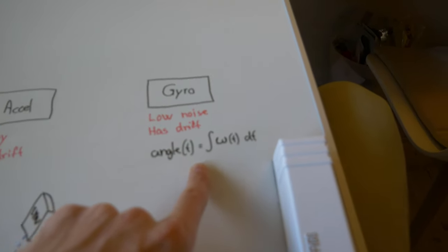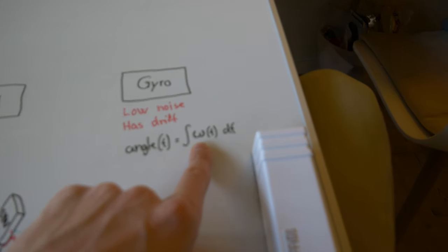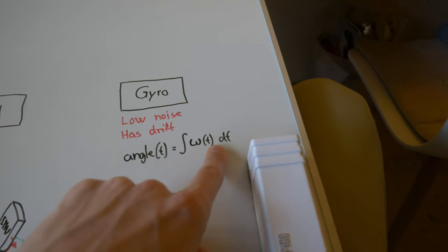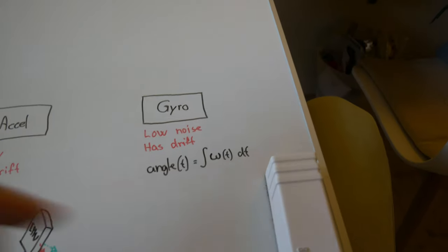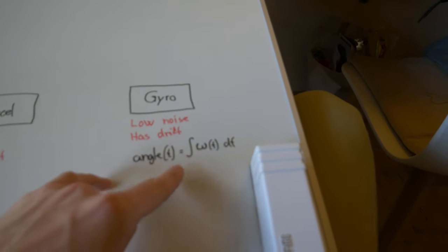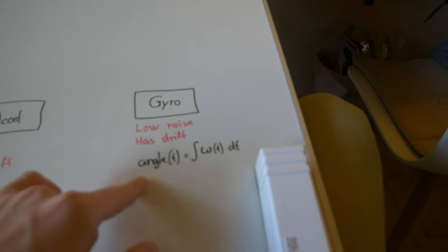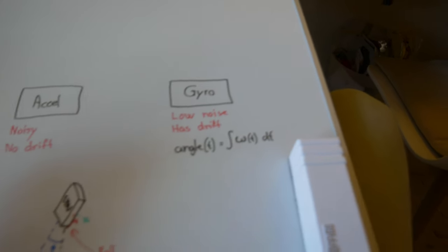The angle at time t is going to be angular velocity integrated over time. This means that if your signal is noisy, then you're going to be accumulating a lot of noise in your estimated angle.